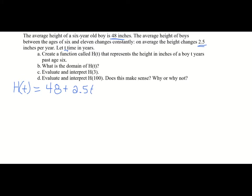We start at 48 inches since that's the average height for a six-year-old, and since they're growing we add to that. On average they grow about 2.5 inches per year, and T is the time in years. So H of T equals 48 plus 2.5T. For the domain, we don't want negative years, but we could say two and a half or three and a half years, so positive real numbers would be a good domain.